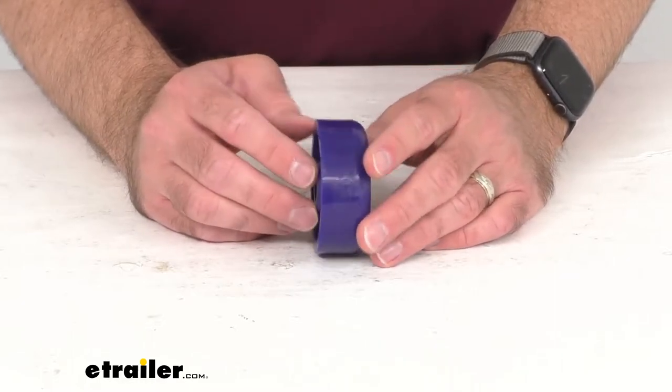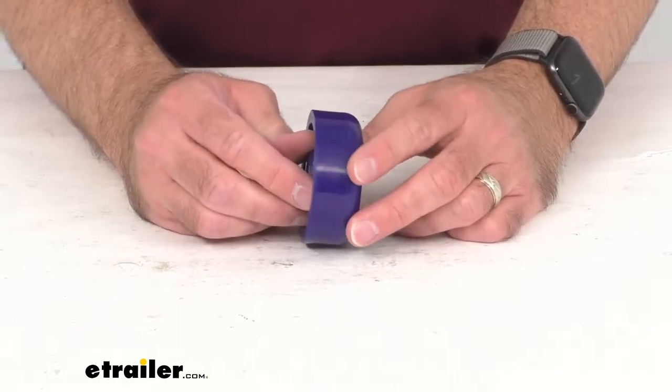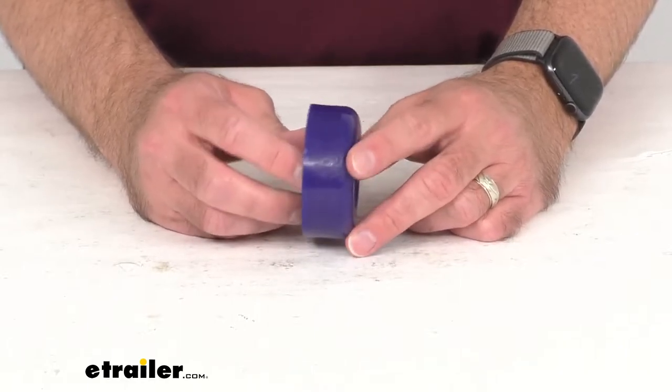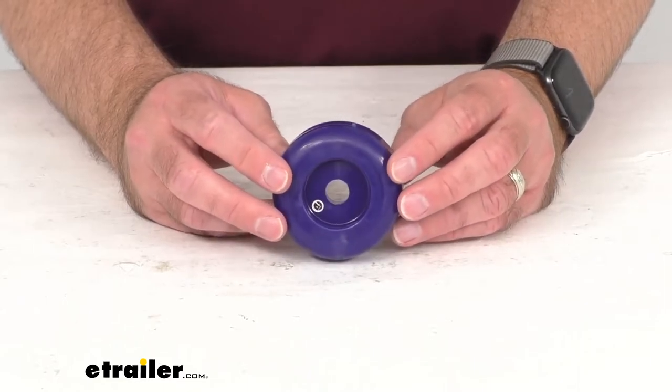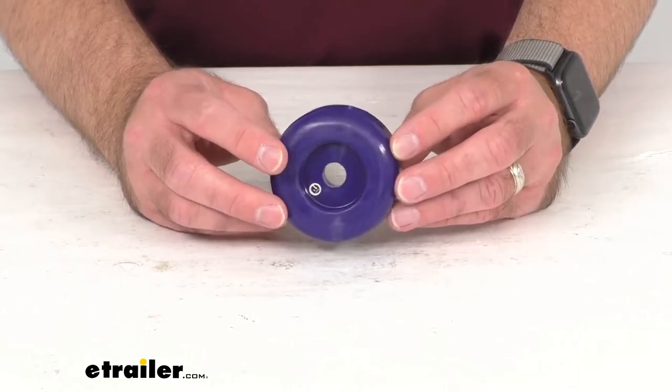You just attach each end cap to the shaft on the outside of the roller bracket and then secure the end cap in place with a cap nut or pal nut.